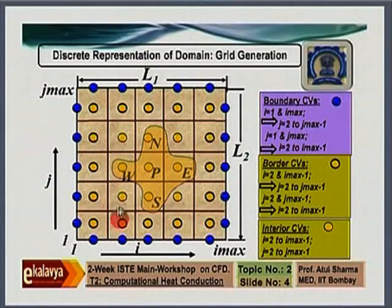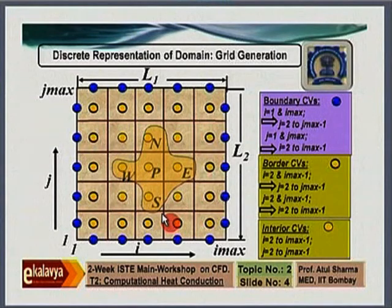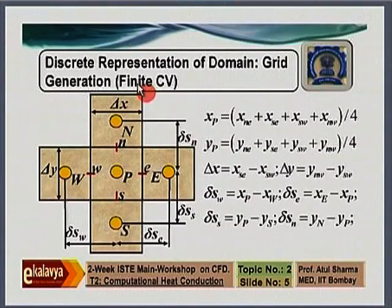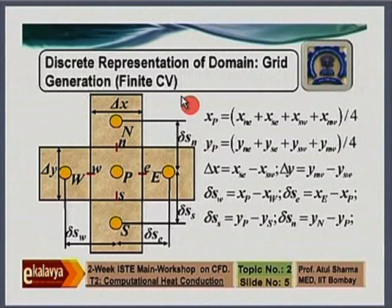In computational fluid dynamics, we do computation point by point, control volume by control volume. We apply conservation laws to each control volume and make sure that the conservation laws are obeyed. We have to move from one control volume to the next, so we have to tag neighbors. Grid generation is not just dividing into control volumes and generating interior and boundary points — that is not sufficient.